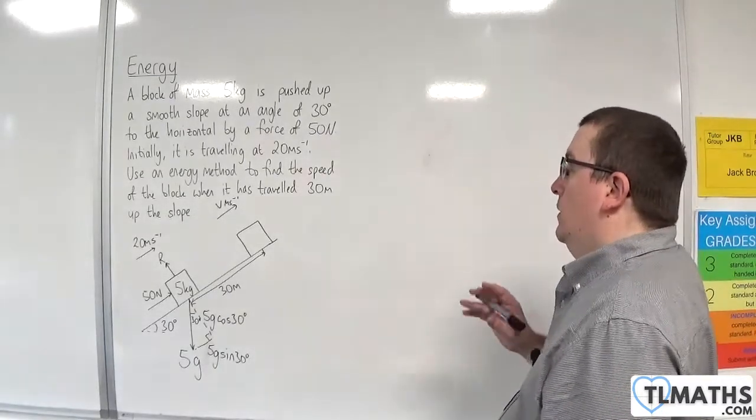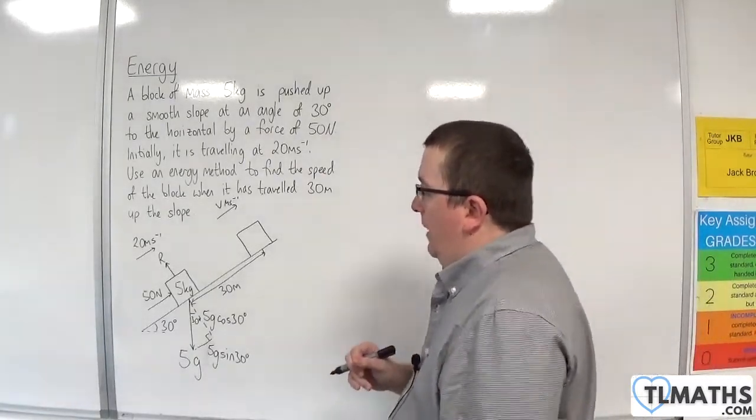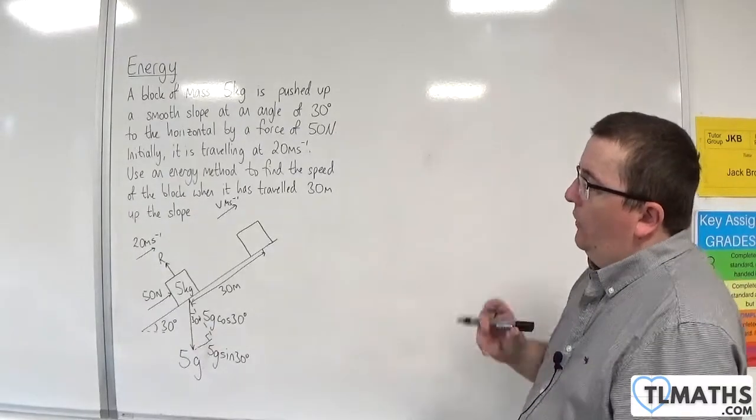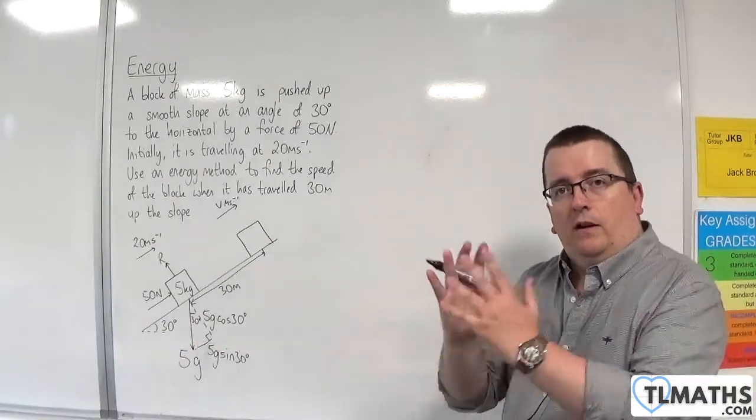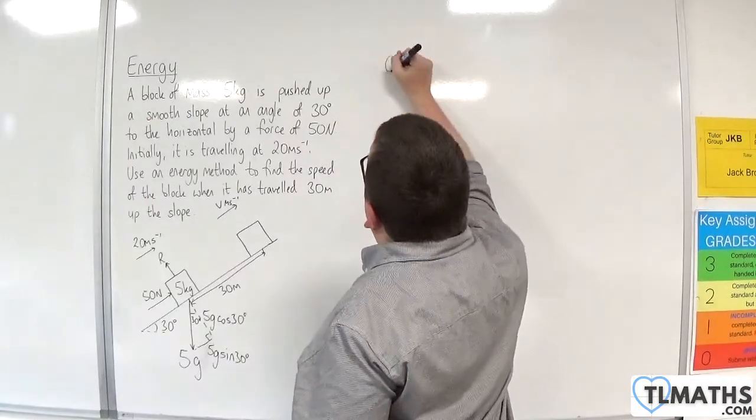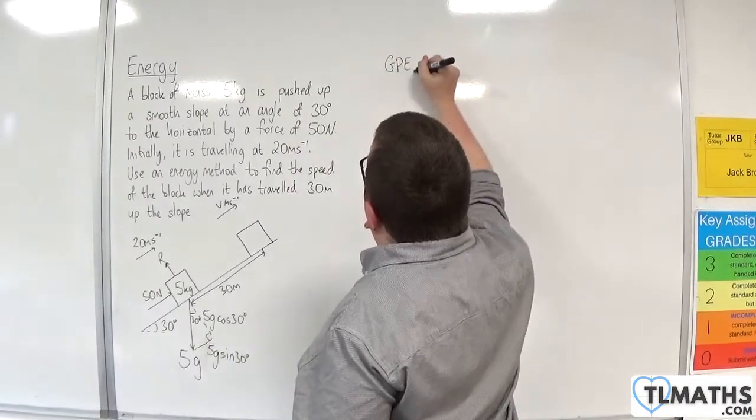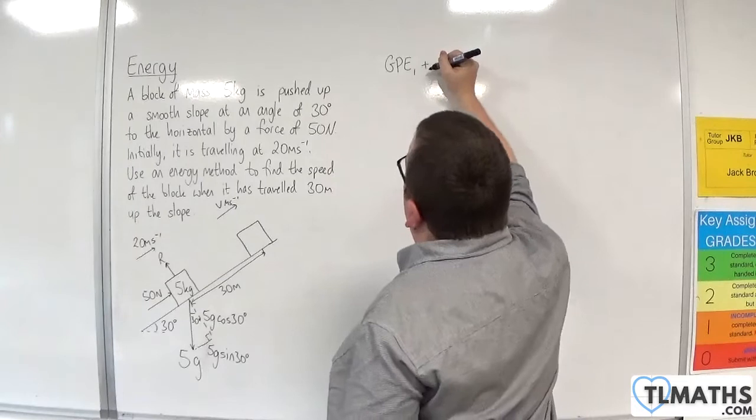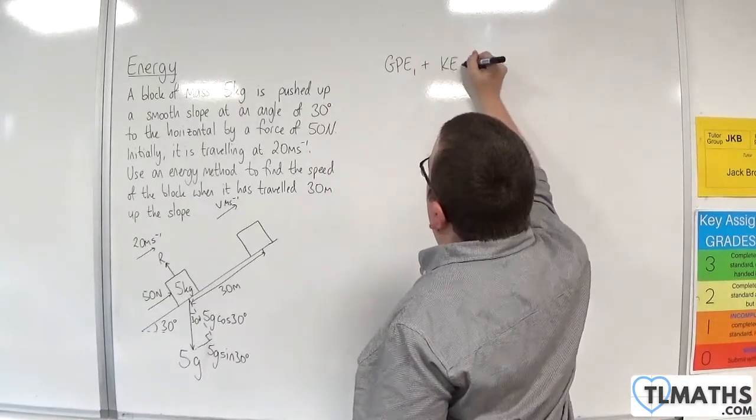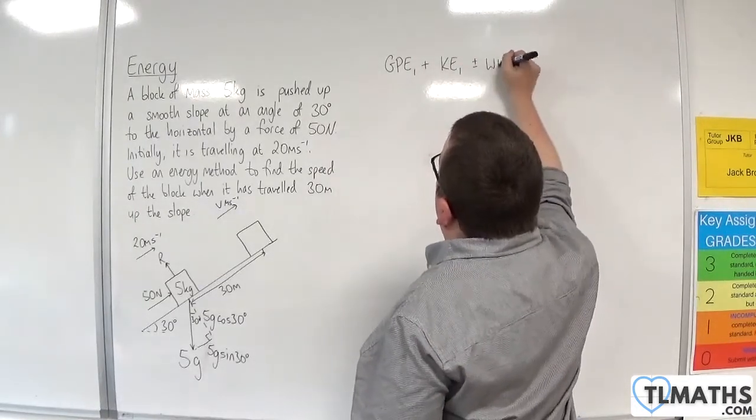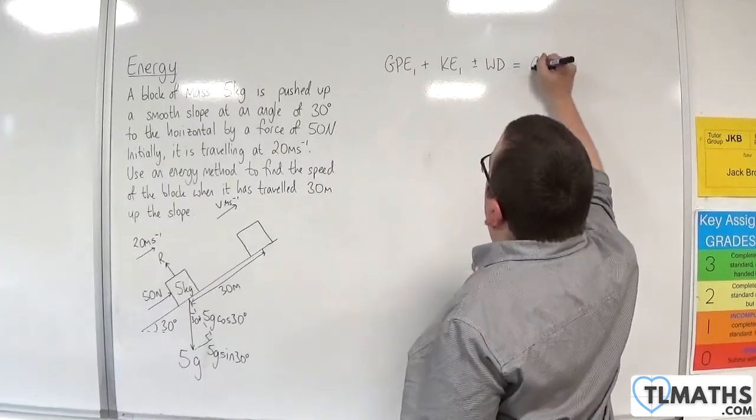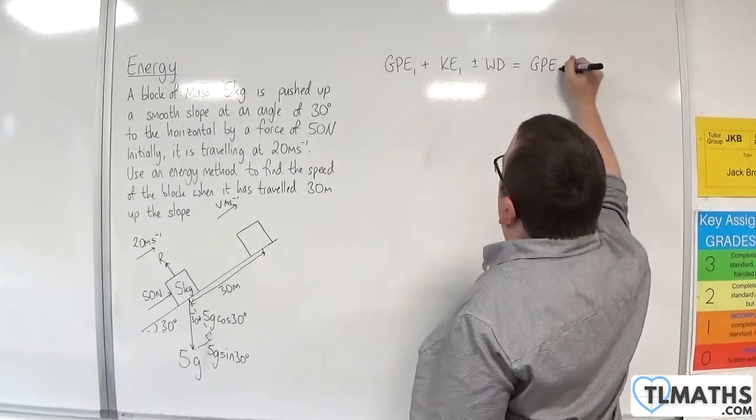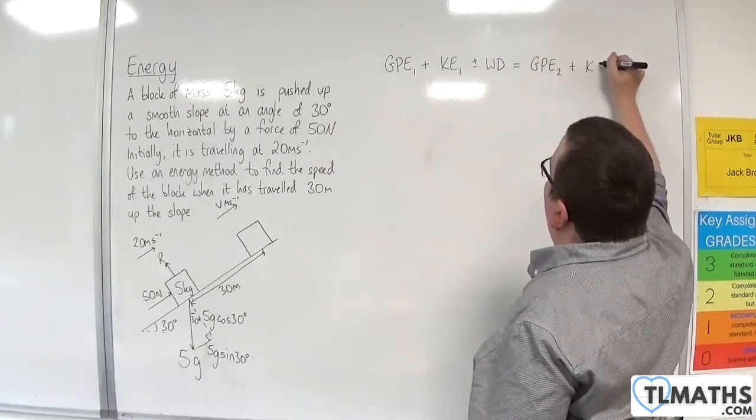With all that information in place, we can now start thinking about putting in our work-energy principle. We've got the initial gravitational potential energy plus the initial kinetic energy plus or minus the work done is equal to the final gravitational potential energy plus the final kinetic energy.